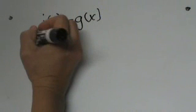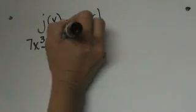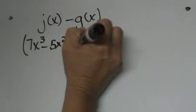Now let's look at the subtraction problem, the second one. We are going to take the j function and subtract the g function. You have to be careful with subtraction because the order is very important. When we subtract, it is not commutative — it is not going to be the same thing if we put them in the wrong order. So our j function is 7x cubed minus 5x squared plus 8.